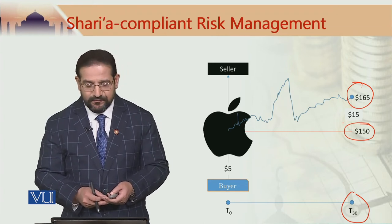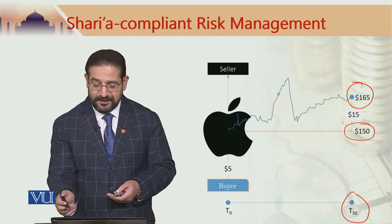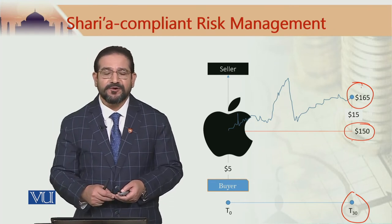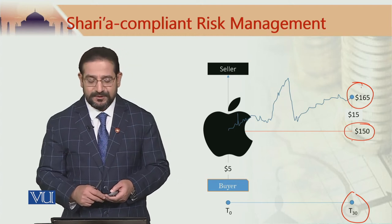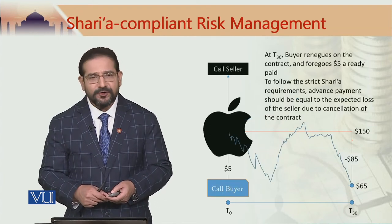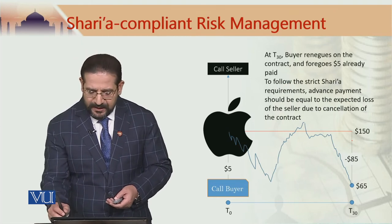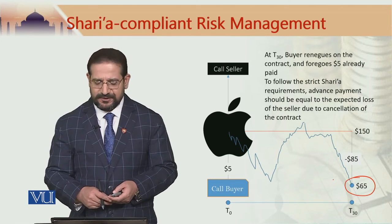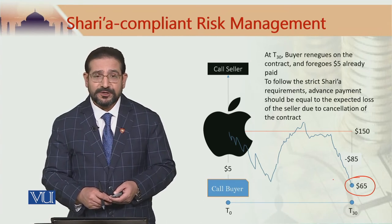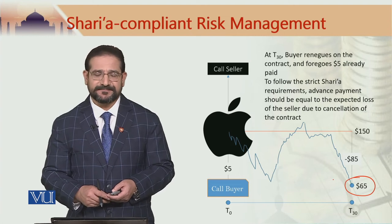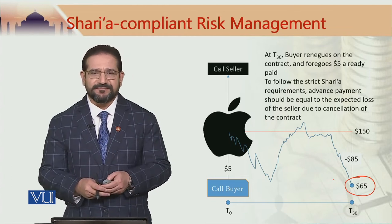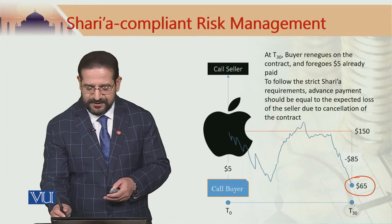In this case, like the conventional case, the call option holder would be benefiting from the difference in price between the two. That would be $165 minus $155, i.e., $10. If, on the other hand, the Apple stock price crashes down to $65 at T30, the Arboon call option holder would not confirm the sale. The view taken by scholars differs across jurisdictions.